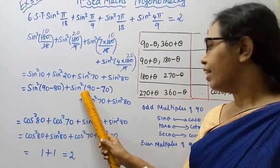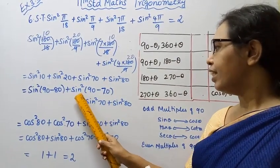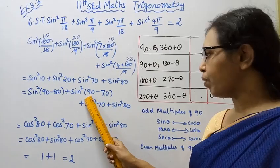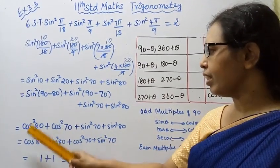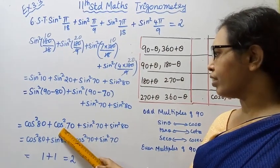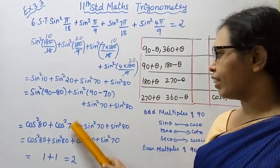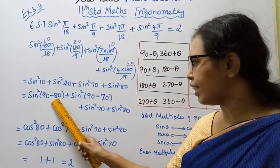Sin 90 minus 70, sin of odd multiple becomes cos. Sin 90 minus 70 is cos 70. So we have cos square 70 plus sine square 70.